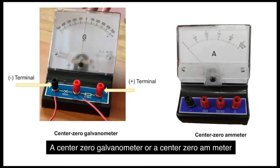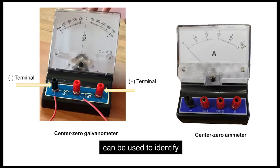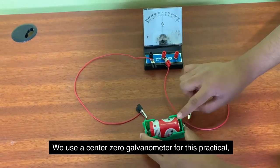A center zero galvanometer or a center zero ammeter can be used to identify the direction of an electric current. We use a center zero galvanometer for this practical.